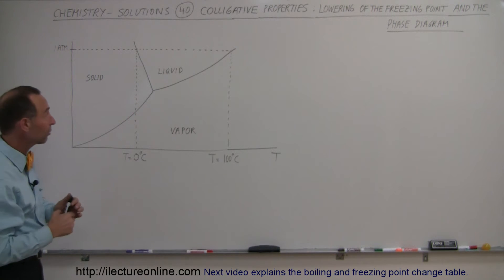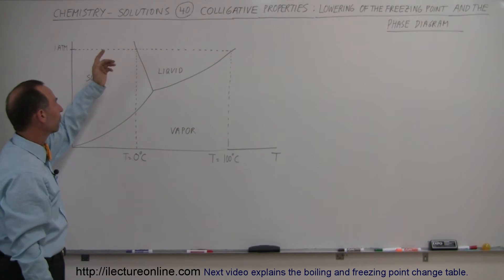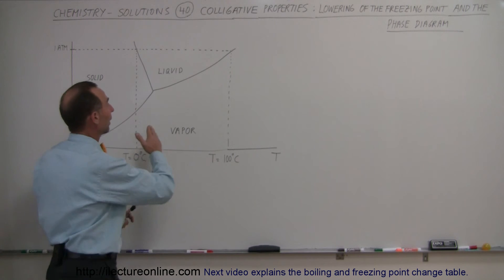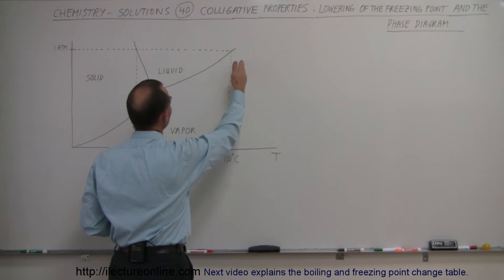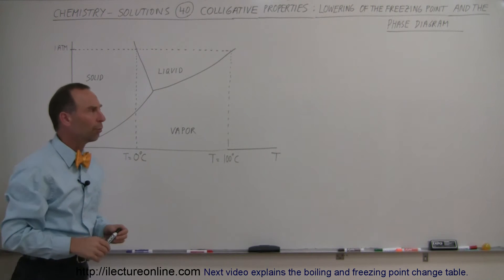Under normal circumstances you can see that at one atmosphere, the boundary between the liquid and solid phase for water happens at zero degrees centigrade, and the boundary between vapor and liquid happens at one atmosphere, which of course means that's the boiling point of water.